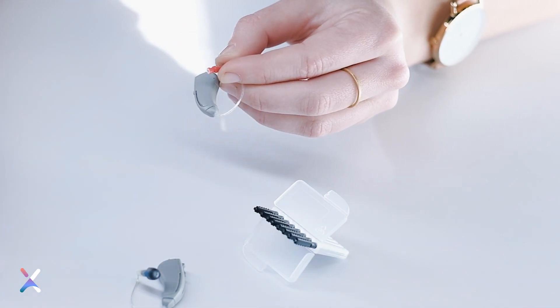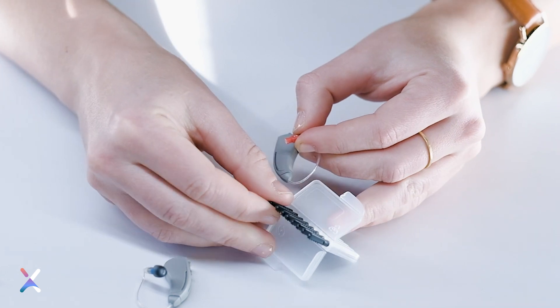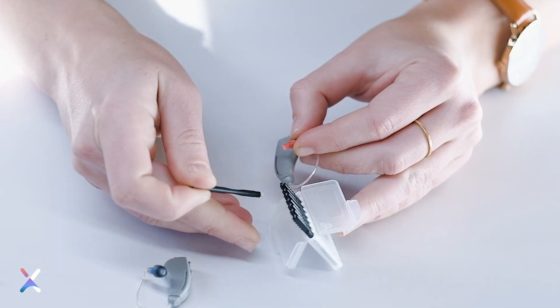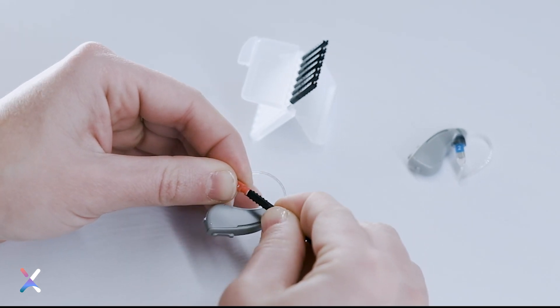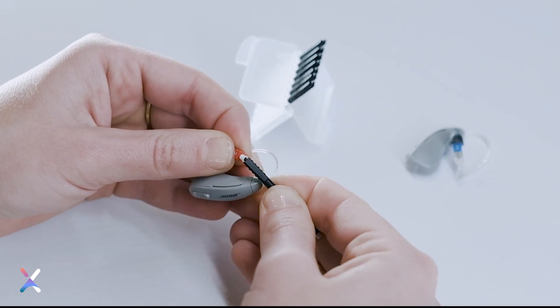Insert the smaller ridged end of the wax guard tool into the center of the white wax guard. Angle the tip of the wax guard tool so it presses against the inside of the wax guard.